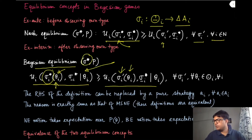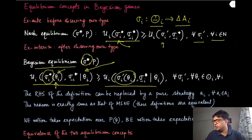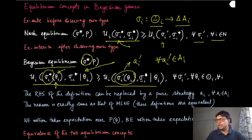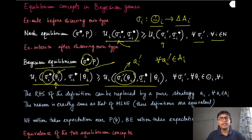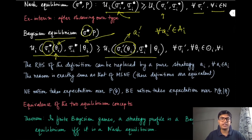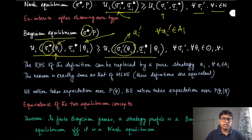A useful remark, similar to what we did for mixed strategy Nash equilibrium: we can replace the right-hand side with just a utility over a single action a_i prime, and say the inequality holds for all a_i prime in capital A. One can show this is necessary and sufficient for the Bayesian equilibrium. This alternate definition is equivalent, and the proof is exactly analogous to the equivalent definition of mixed strategy Nash equilibrium in the normal form game — it can be left as an exercise.